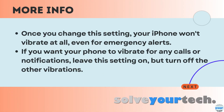After you decide to turn off all of the vibration, your iPhone won't vibrate at all for any notifications or emergency alerts. If you still want to use any of the vibration options on the device, then you need to leave this setting turned on and shut off the individual vibration settings that you don't want to use.